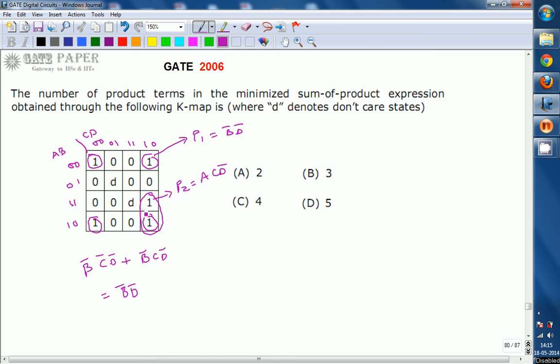So, with the help of these two product terms, we can cover all the ones present in this one. Don't care. No need to consider. If it is useful in getting a bigger minimization cell, at that time, that can be considered. Otherwise, no need to consider. So, here no need to consider. You are going to get two product terms in the minimized SOP expression.